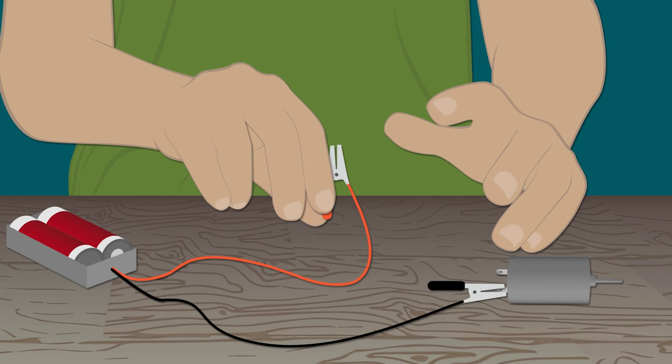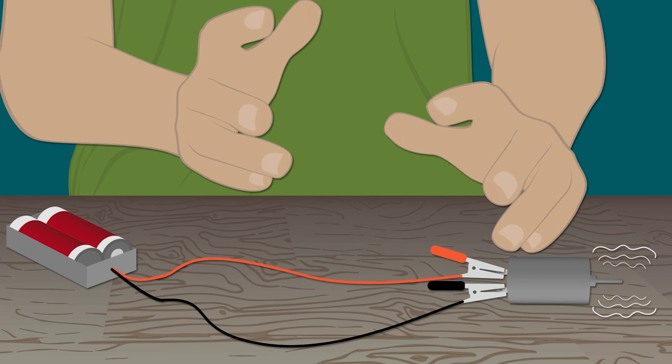A closed circuit is a circuit that is working and has electricity flowing through every part of it. When a circuit is closed, it is turned on.